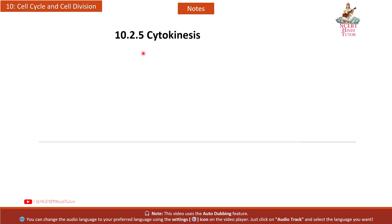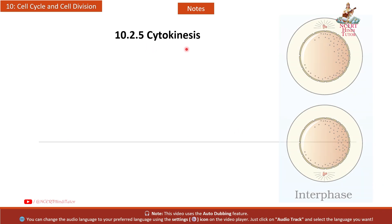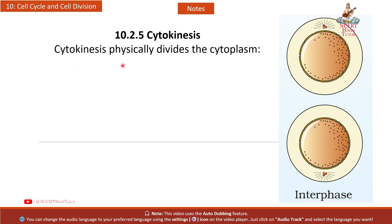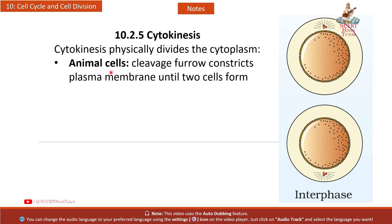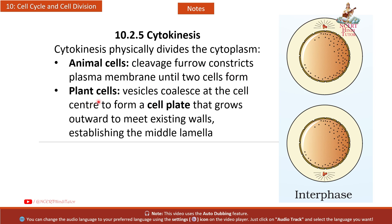10.2.5 Cytokinesis: Cytokinesis physically divides the cytoplasm. In animal cells, a cleavage furrow constricts the plasma membrane until two cells form. In plant cells, vesicles coalesce at the cell center to form a cell plate that grows outward to meet existing walls, establishing the middle lamella.